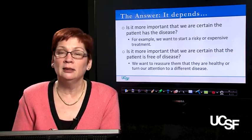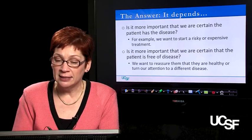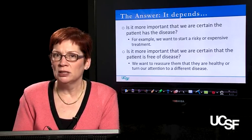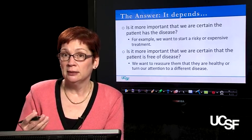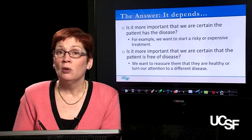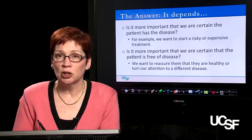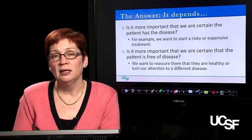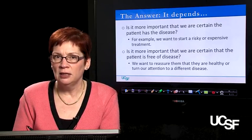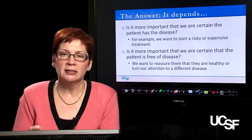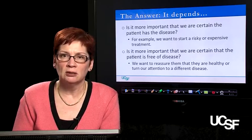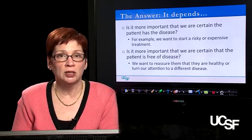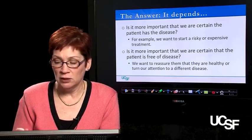It depends on whether it's more important that we are certain the patient has the disease. We want to be absolutely certain our patient has a disease if we plan to start a risky or expensive treatment. For instance, if the treatment is chemotherapy for leukemia, we'd better be as close to 100% as possible that the person actually has leukemia. Or is it more important that we're certain the person is free of disease — to reassure them they're healthy, or to stop considering a distracting diagnosis and turn our attention to a different disease? By the end of this module, you'll be able to identify the right type of tests to answer each of these questions.